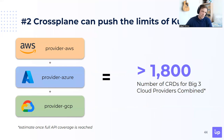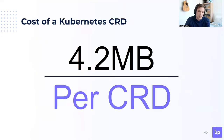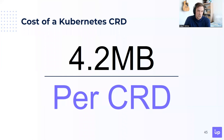The second thing to be aware of is that Crossplane can really push the limits of Kubernetes. If you take the AWS, Azure, and Google providers combined, we estimate there are about 1,800 CRDs. The cost of a Kubernetes CRD is about 4.2 megabytes per CRD. So if you provision the big three cloud providers, wanting to pick and choose services from all of them, you end up with a significant memory usage for those providers.